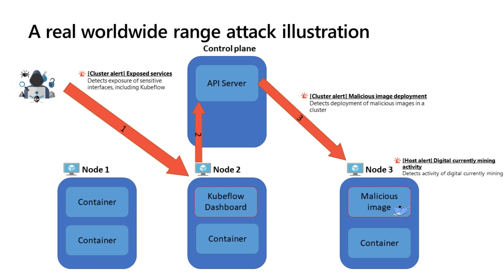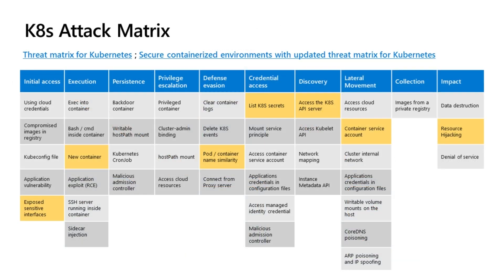This shows how Azure Defender can first detect the exposed service and alert on that. Assuming that was not fixed, we can detect that a malicious image deployment has happened. After that, we can see that the mining activity is happening on your containers and we provide alerts on that. These kinds of alerts and behaviors will not be detected by regular detections like old server detections.